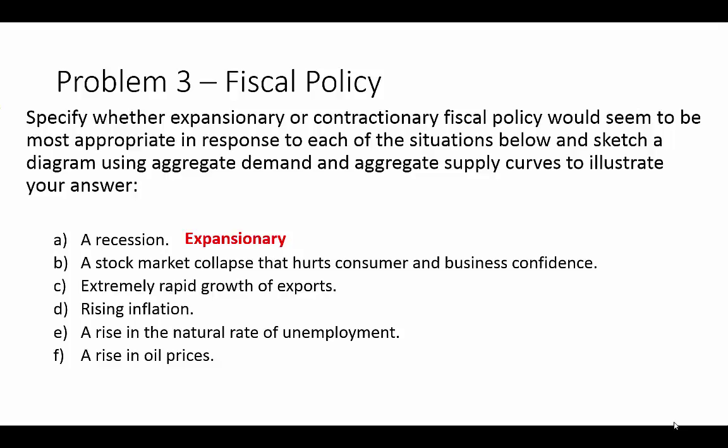Scenario B: a stock market collapse that hurts consumer and business confidence. Business and consumer confidence impacts demand, so we need to get demand going again — that calls for expansionary fiscal policy. Scenario C: extremely rapid growth of exports. Exports are one of our inputs into total output, our GDP, so we're going to see inflationary pressure. What we need here is contractionary policy to help control inflation in the economy.